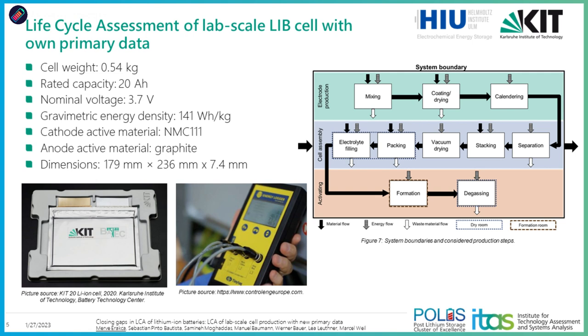Based on the identified data gaps — lack of primary data, lack of transparency, and lack of data on lab scale — we conducted our own LCA. We conducted measurements on the KIT 20 pouch cell at lab scale, making in-house measurements to collect energy consumption with measuring devices and weighing materials. We considered the spatial environment such as the dry room and all relevant processes necessary to produce a battery cell, such as coating and calendaring. We provided all inventory data fully transparently so that everyone can use, replicate, or investigate it further. We used a bottom-up approach, making it possible to isolate individual processes and identify hotspot processes with a very high environmental burden.